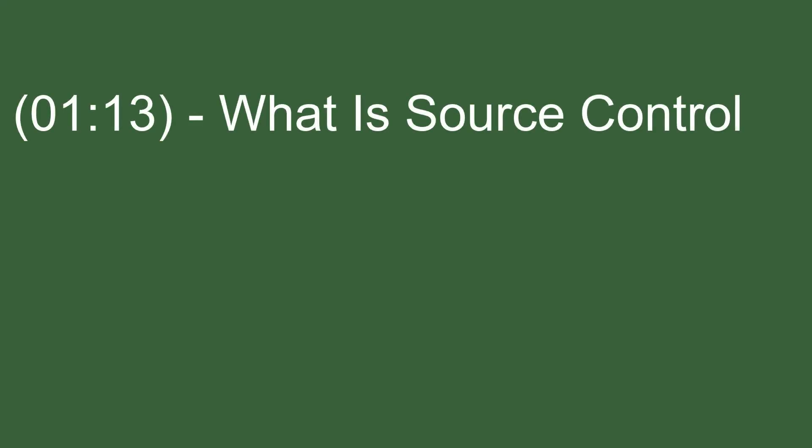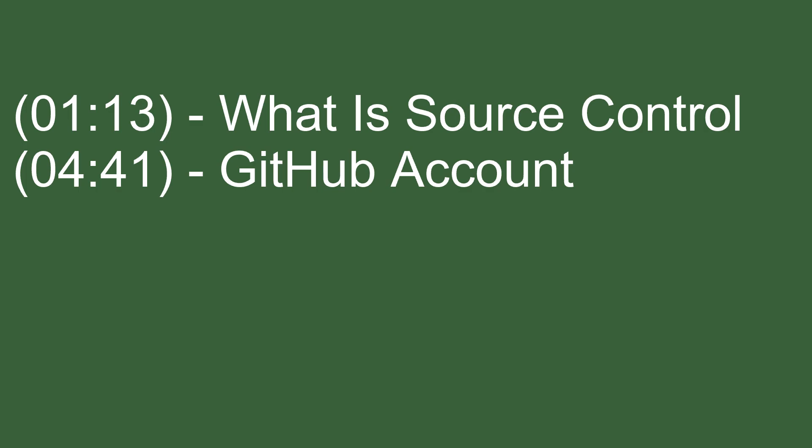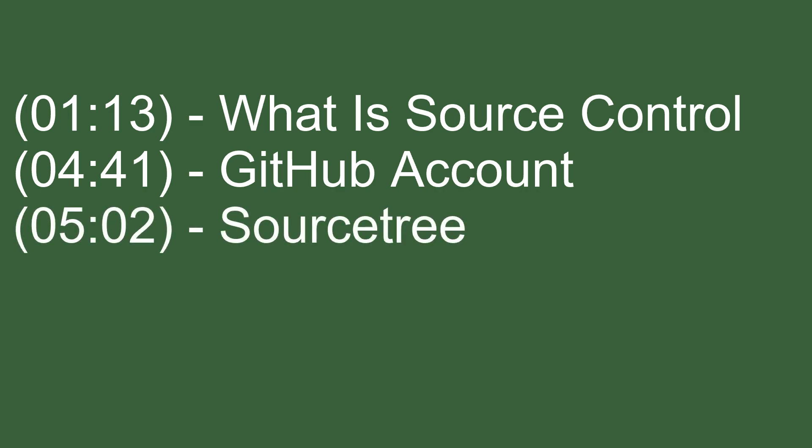This video is going to be split up into five parts. Part one will explain what source control is — you can skip that if you already know. I've put timestamps on the screen. Step two will be creating a GitHub account. Step three will be downloading SourceTree, which is what we're going to use to interact with GitHub rather than using the command line. It's a lot easier for beginners and also really useful for advanced users.